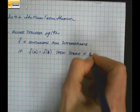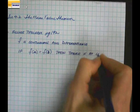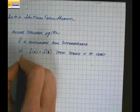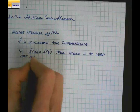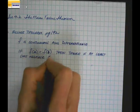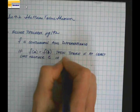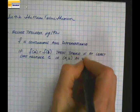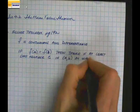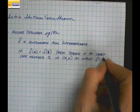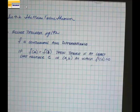Then there is at least one number c in that interval a to b — that's an interval a, b — at which f prime of c equals 0.